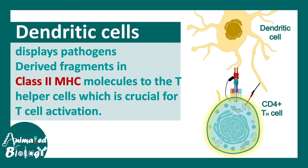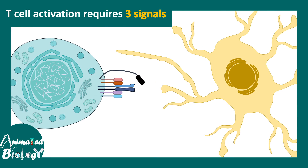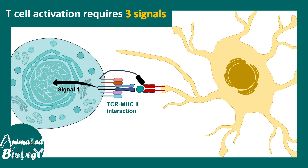There are three important signals that trigger T-cell activation. The first signal is the interaction between MHC class 2 and the T-cell receptor, which gives rise to Signal 1 for activation.